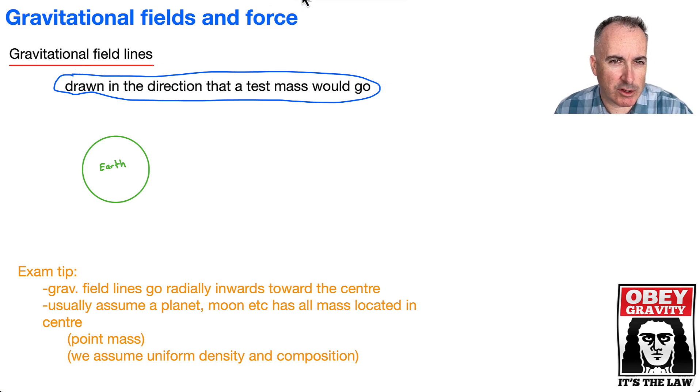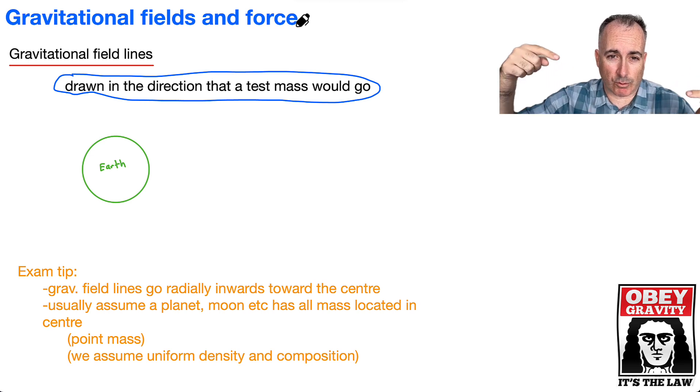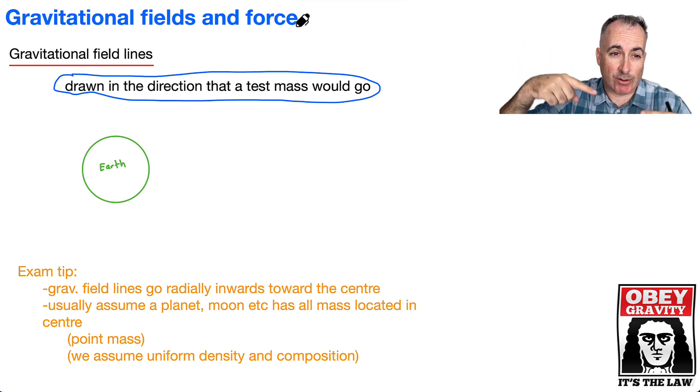It seems a bit weird to do this, but it really helps us to know the direction of things. If an object has mass, then it will have these gravitational field lines, and they will go radially inward. They always go from the outside to the inside.